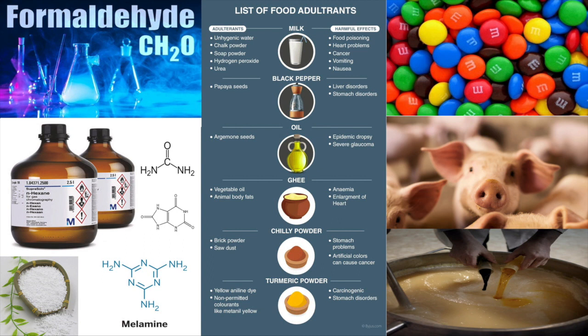In oil, argemone seeds are the adulterant and their harmful effects include epidemic dropsy and severe glaucoma. In ghee, adulterants include vegetable oil and animal body fats, and their harmful effects include anemia and enlargement of the heart. In chili powder, adulterants are brick powder and sawdust, which cause stomach problems, and artificial colors can cause cancer. In turmeric powder, adulterants include yellow aniline dye and non-permitted colorants like Metanil Yellow, which are carcinogenic and cause stomach disorders.